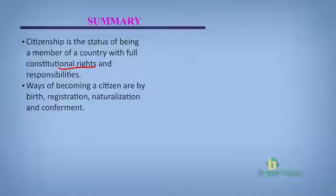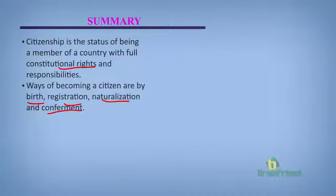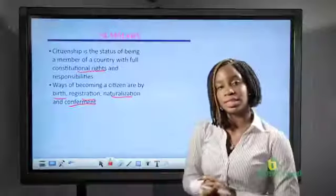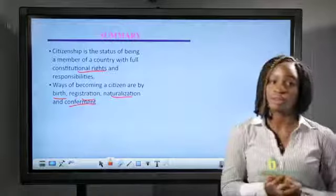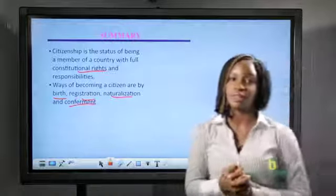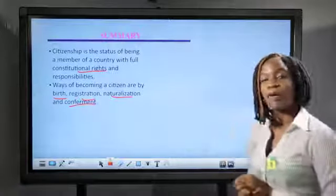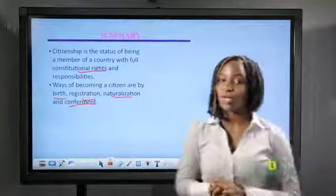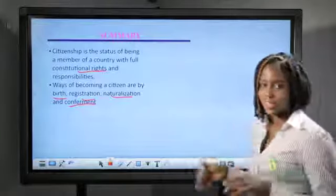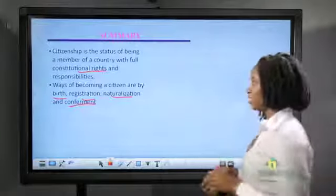We said there are four major ways through which a person can become a citizen of Nigeria: first by birth, second by registration, third by naturalization, and fourth by conferment. I hope you know who a citizen is now and what it takes to actually become a citizen. Now we are going to do a brief test to see how much we have learned in today's lesson.